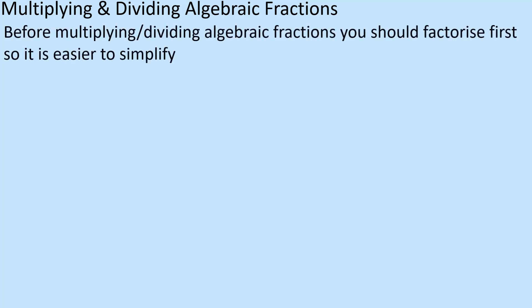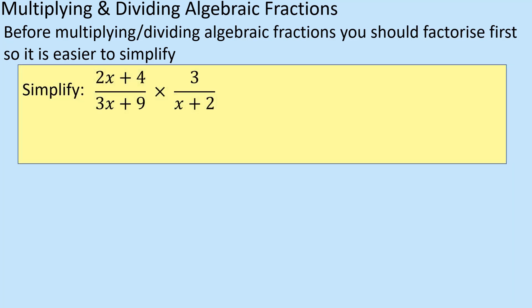So let's just take a look at the example, and it mentions in here about factorizing first to make your life simpler. So that's the key thing that we're going to look at. Don't get frightened by what you can see, it looks a little bit over-complicated, but it's not. It really is just a case of take it step by step. So we've got something looking like this: you've got 2x + 4 over 3x + 9 times by 3 over x + 2.